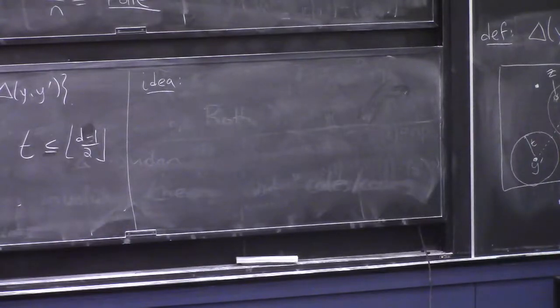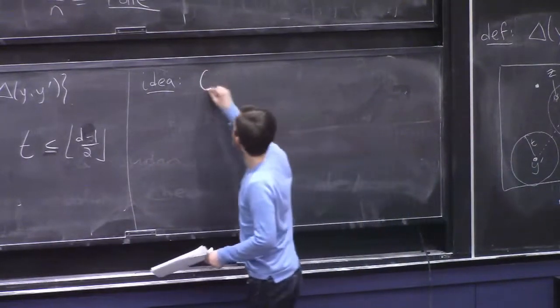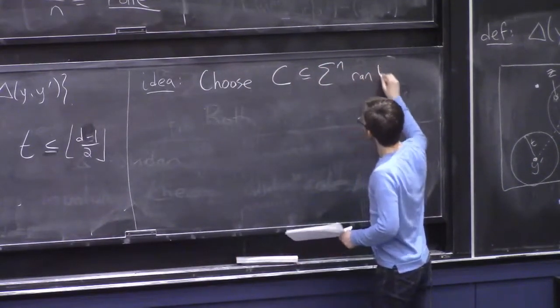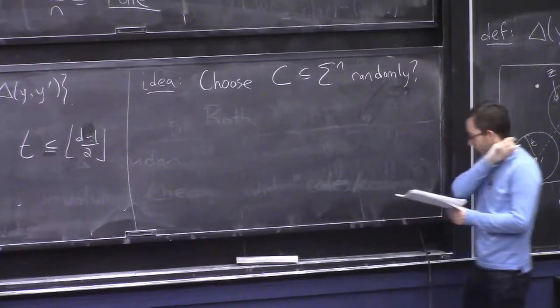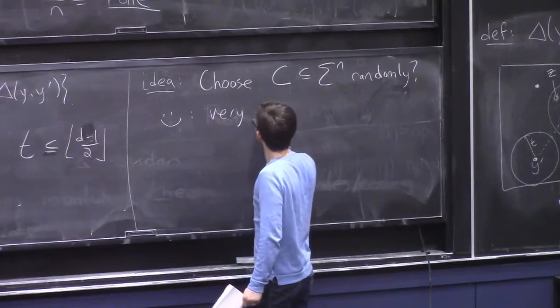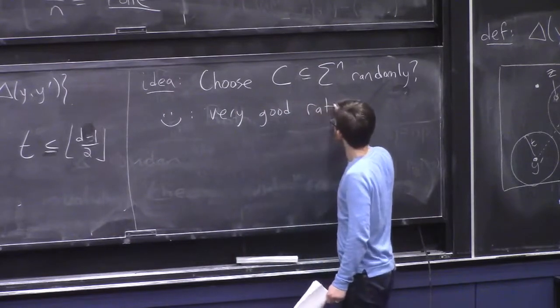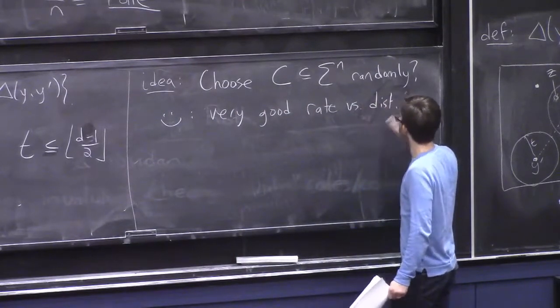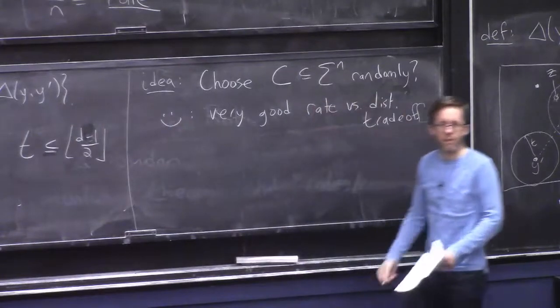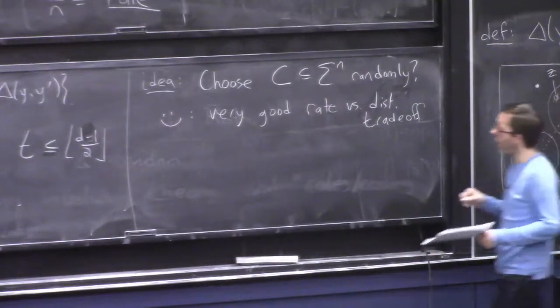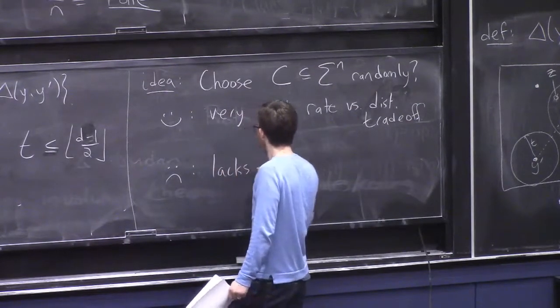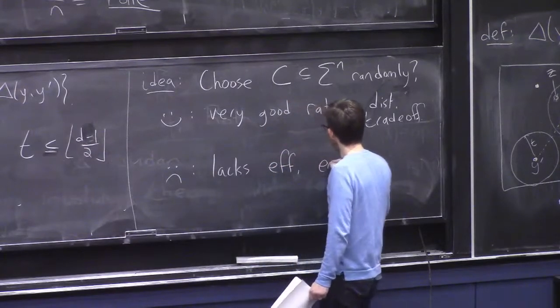So as I was saying, potentially one way to get a lot of code words that are all mutually far apart is perhaps you could choose this set of code words randomly. And that's not a bad idea. In fact, we'll talk about this towards the end of the lecture. The good thing about it is you do get a very good rate versus distance trade-off. Usually I'll start just saying distance instead of minimum distance. And what's bad about it is it's bad algorithmically. It lacks, typically, efficient encoding and decoding algorithms.